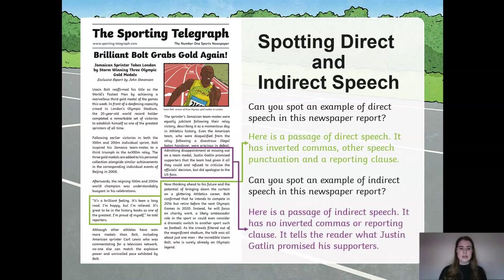Well done. Admitting disappointment at missing out on the medal, Justin Gatlin promised supporters that the team had given it all they could and refused to criticise the official decisions, but did not apologise to the US fans. This is an example of indirect speech because it is reporting something that Justin Gatlin did — it is not directly addressing the speech or the direct quote he actually said. It tells the reader what he promised his reporters rather than his actual words. There are no inverted commas and no reporting clause.